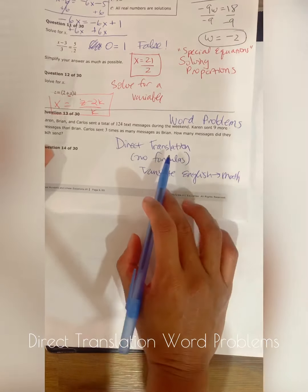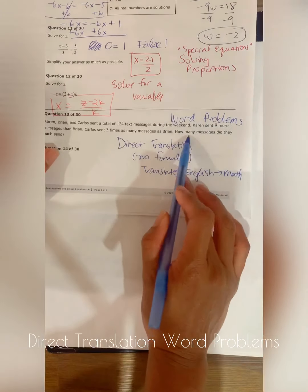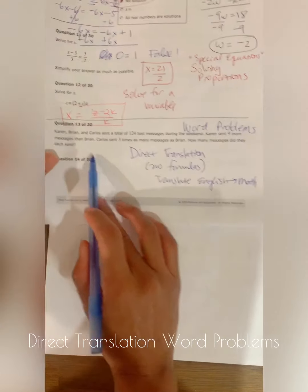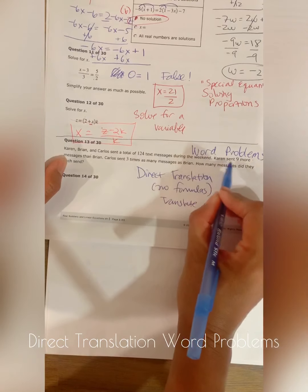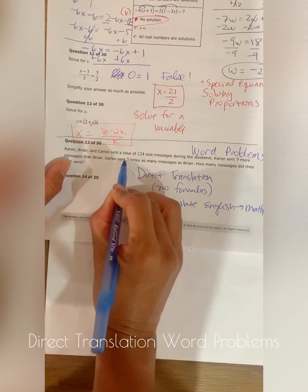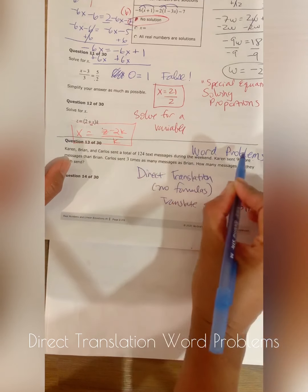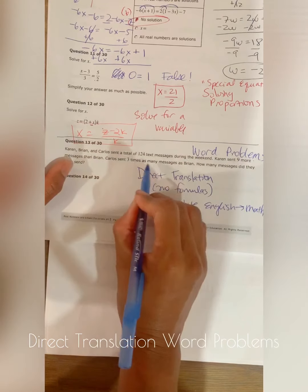Okay, so first of all, let's see what we don't know. How many messages did they each send? So there's Karen, Brian, and Carlos. So Karen sent nine more than Brian. Carlos sent three more than Brian. So Karen, Brian, and Carlos...